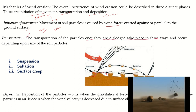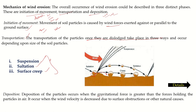Threshold velocity is the velocity required to move a soil particle from one place to another. Transportation means particles may move in three major processes: suspension, saltation, and surface creep. After transportation, soil deposits where velocity reduces — when gravitational force is greater than the force holding the particle in air — which occurs when velocity decreases due to surface obstruction or other causes.